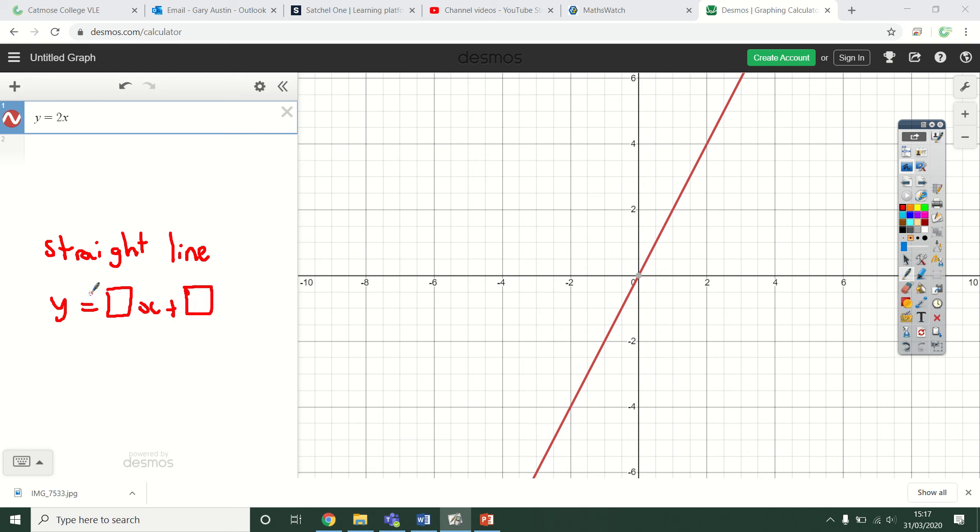These boxes represent numbers you can change, but it will always produce a straight line. Typically you'd see it written a bit different. Normally you'd see it written like this: y equals mx plus c. That's how we typically look at the equation of a straight line. m and c are numbers that go in there.